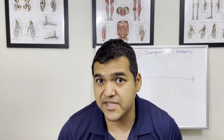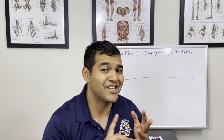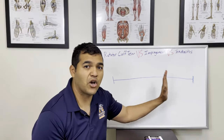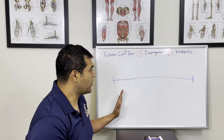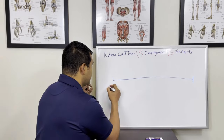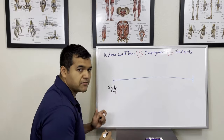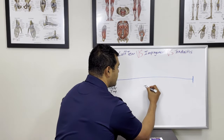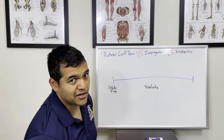What I want you to understand is that a rotator cuff tear, shoulder impingement, and shoulder tendonitis are on a spectrum of shoulder pain. They're all related — one leads into the next, and each is a more severe version of the one before. On the left side of the spectrum is shoulder impingement, in the middle is tendonitis, and on the far end is a rotator cuff tear.